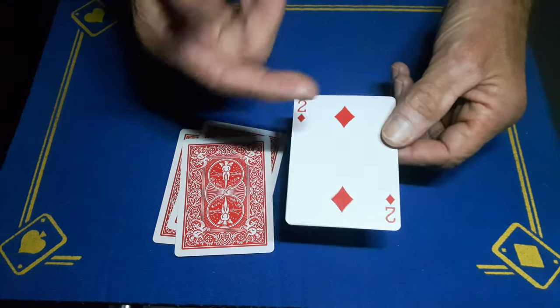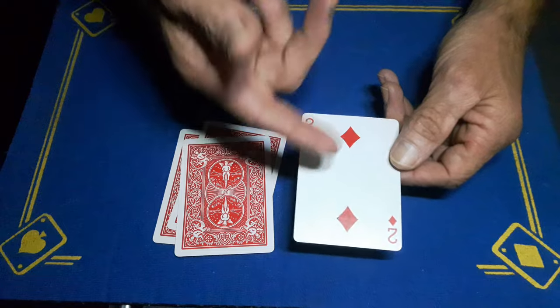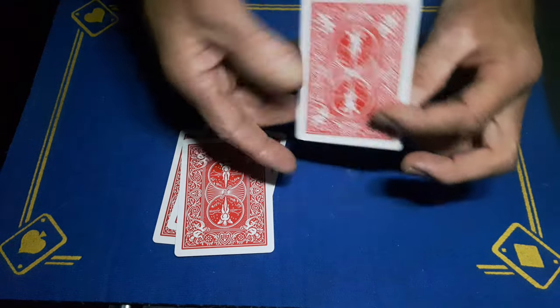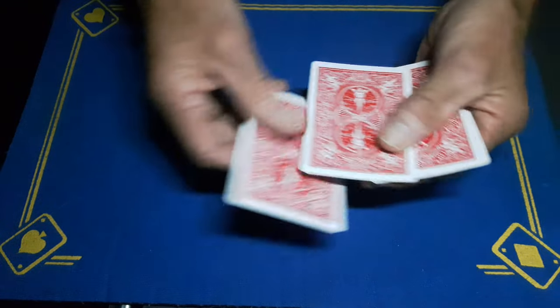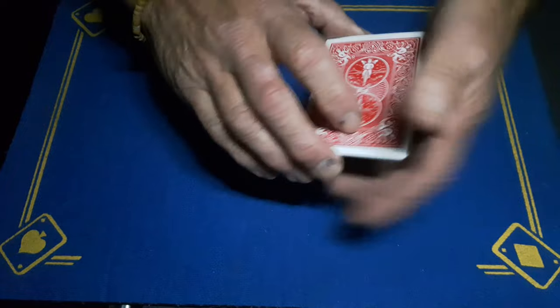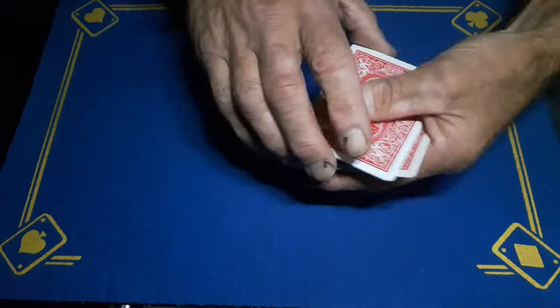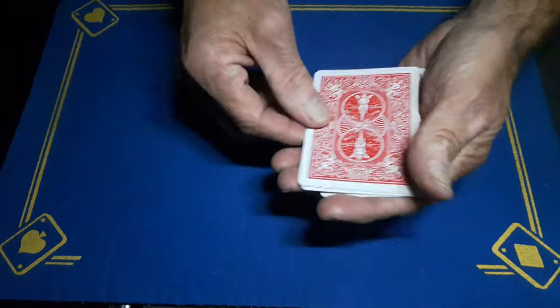Got an ace here, right, scrap that. The two is the money card, keep your eye on the two. So many cards we've got, yeah, we've got four cards. So keep your eye on the two. So we have a blank card...